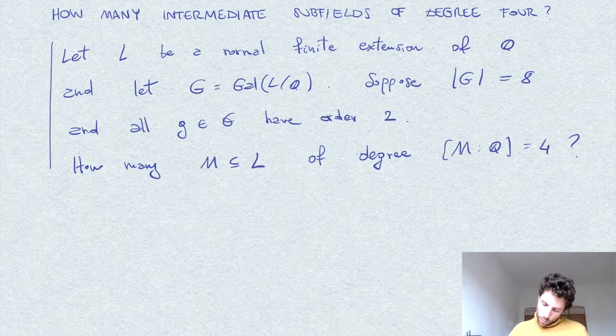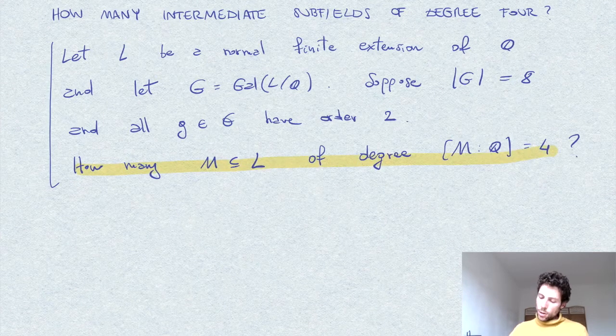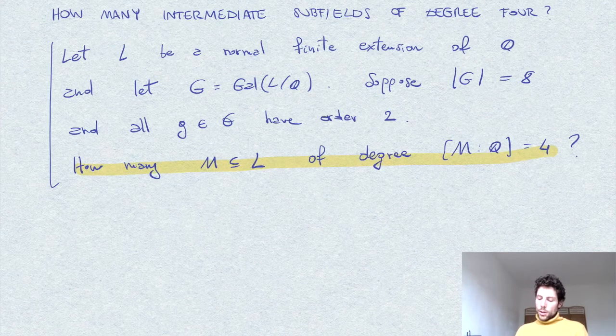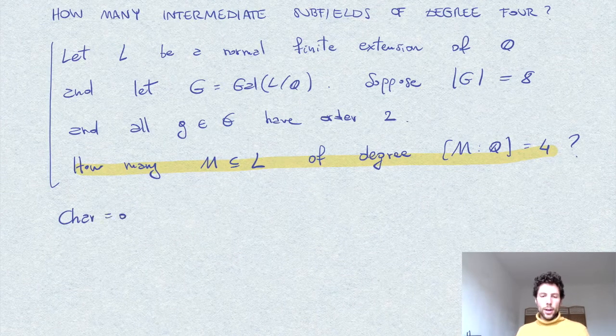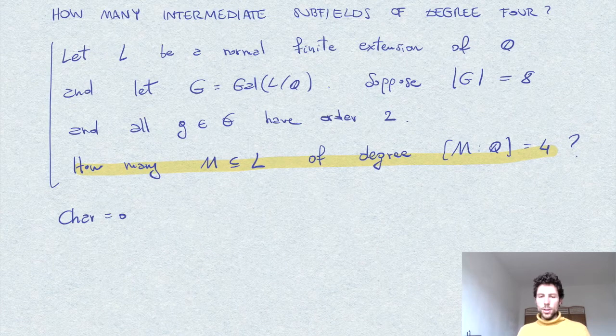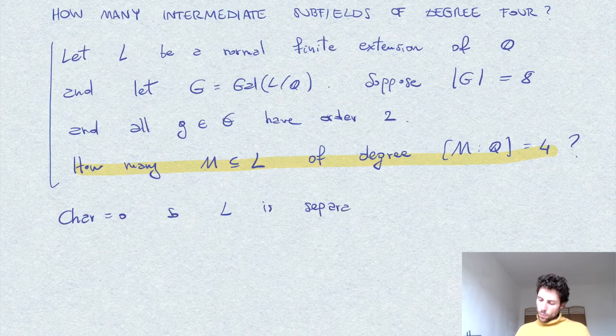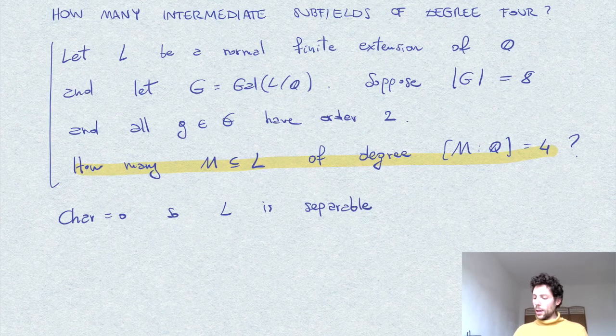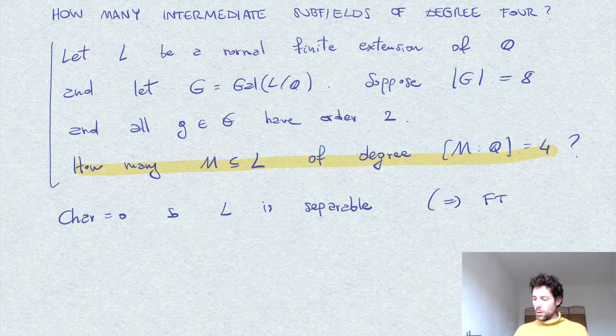We want to find the number of such extensions. As I said, we are here in characteristic zero, so each extension is separable, and therefore we can apply the fundamental theorem of Galois theory.